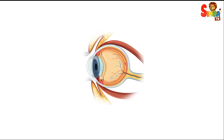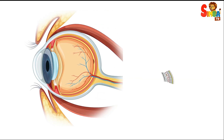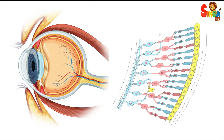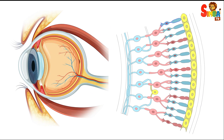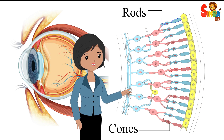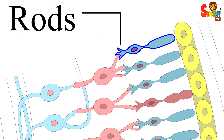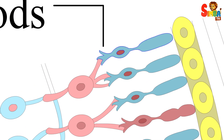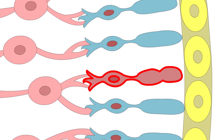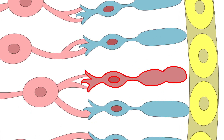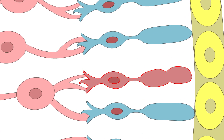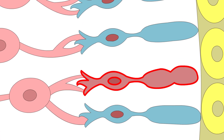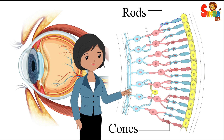Eye structure: Human eyes contain two types of photoreceptor cells — rods and cones. Rods are responsible for vision in low-light conditions, while cones are responsible for color vision in brighter light. However, rods are not as sensitive to color as cones are.